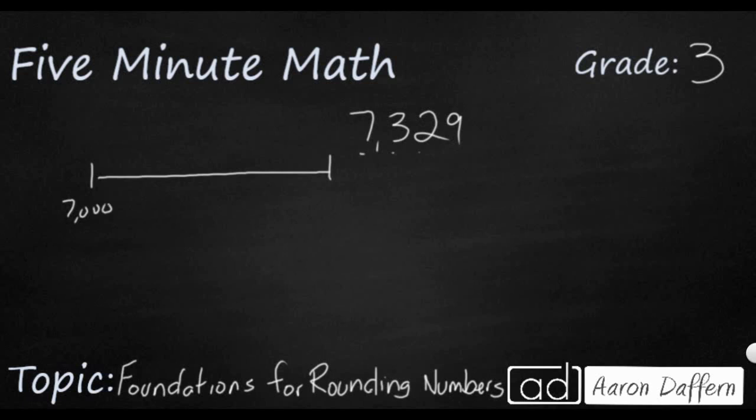But if I added another 1,000, that would be 8,000. So these are going to be my two benchmark numbers. And 7,329 is going to fall somewhere in between these two. As always, you need to find your middle point. And in this case, half of 1,000 is not going to be 5 like it is on the 10s number line. It's going to be 500. So 7,500 is halfway between the two. And this is going to fall probably right around here because this 7,300 is going to be between 7,000 and 7,500.